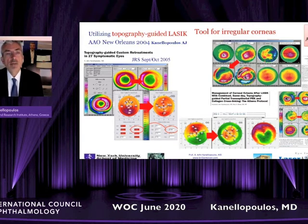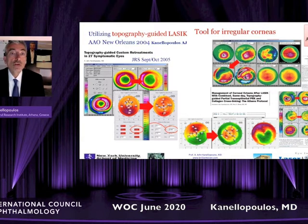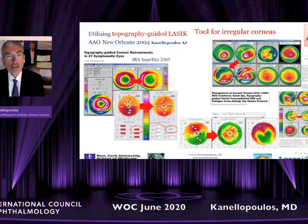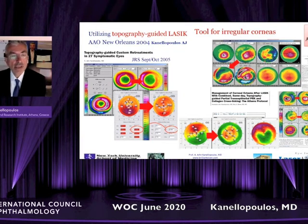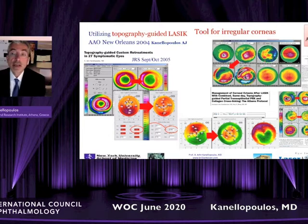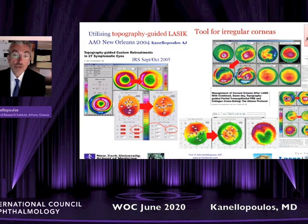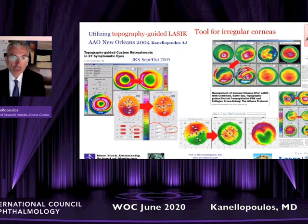Now let's go to customized ablations. We have used for many years — and this is from a presentation in New Orleans in 2004 — topography guided through the Alcon platform, initially designed to improve eyes that were problematic in a therapeutic mode. We were able to enlarge small optical zones that older technology lasers had, treat irregular corneas such as keratoconus and ectasia. On the bottom slide you can see a scar treated on the left, the result achieved in the middle, and the difference on the right — very dramatic interventions using refractive surgery as a therapeutic tool.